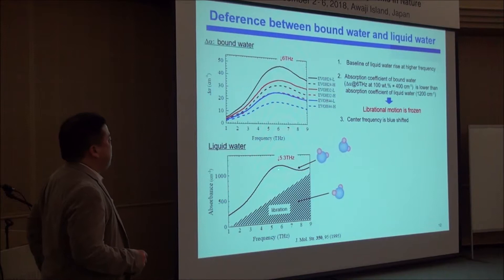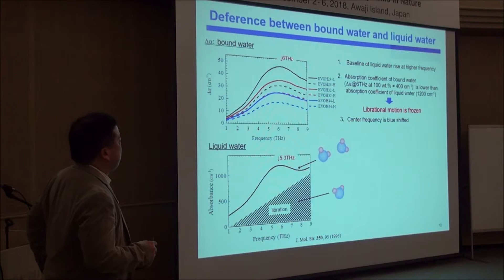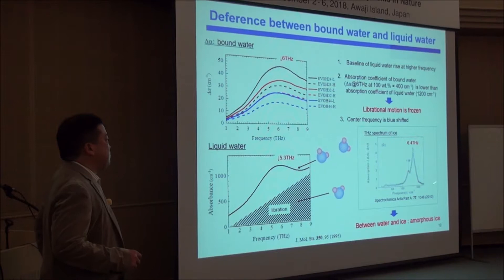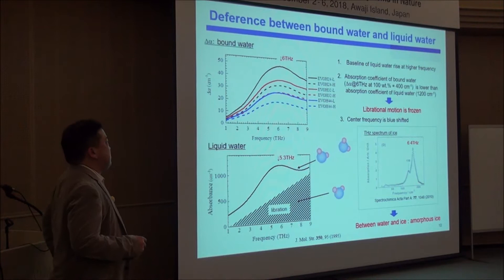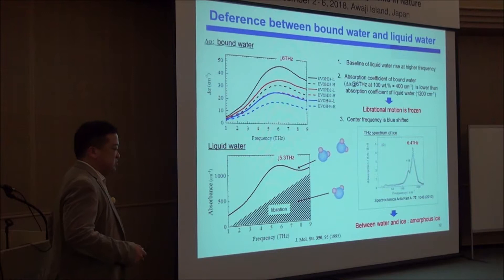Also, the peak position is shifted. In liquid water the band top is at 5.3 THz, but it is blue-shifted in bound water. For comparison, this is the spectra of ice, which has no librational vibration. I think the bound water is somewhere in between ice and liquid water — most probably the bound water is forming something like amorphous ice.